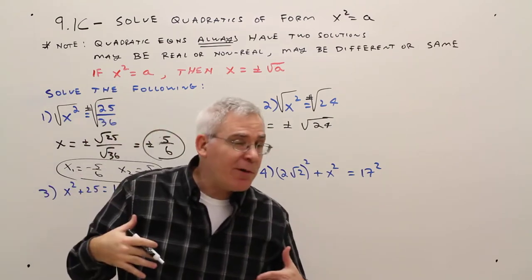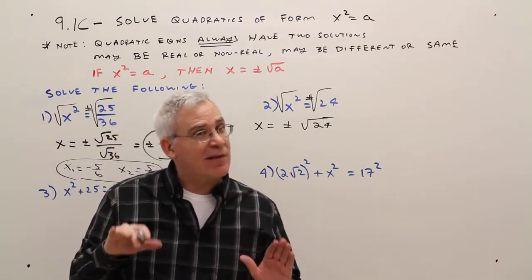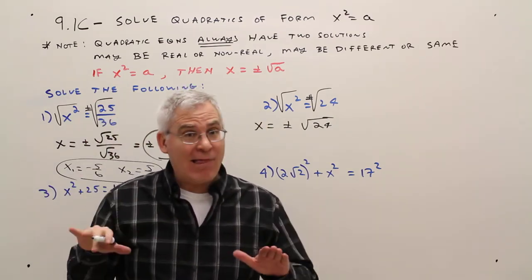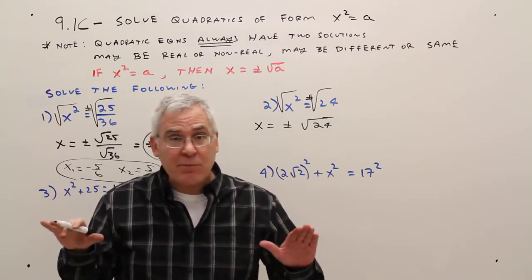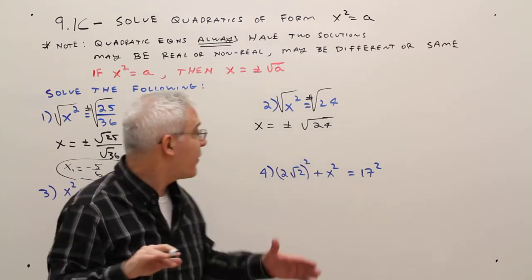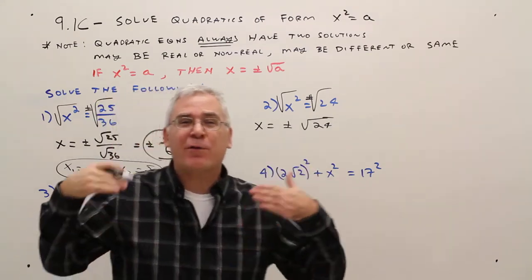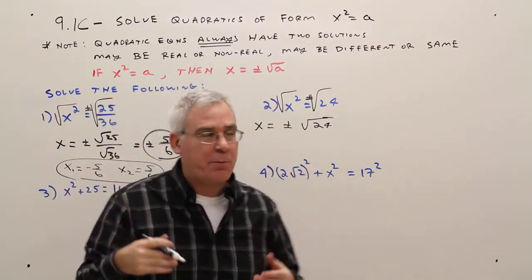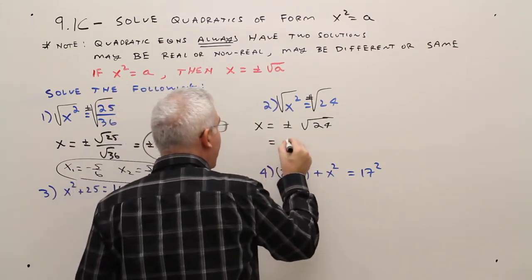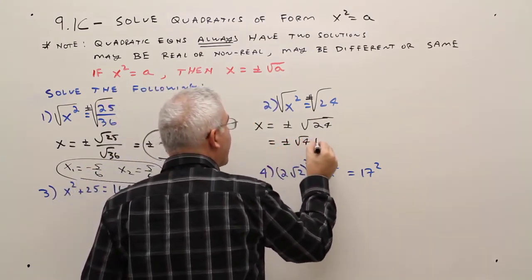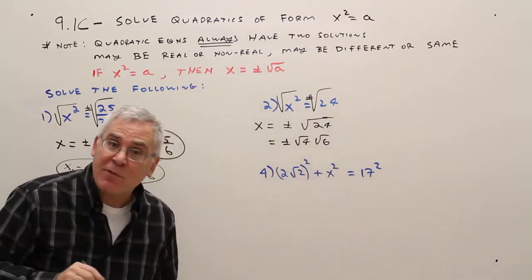Now you always want to report your answers in exact simplified form unless otherwise specified. Sometimes I might say round to the nearest tenth. I know 24 is 4 times 6 and 4 is a perfect square. So I'll say equals plus or minus the square root of 4 times the square root of 6.